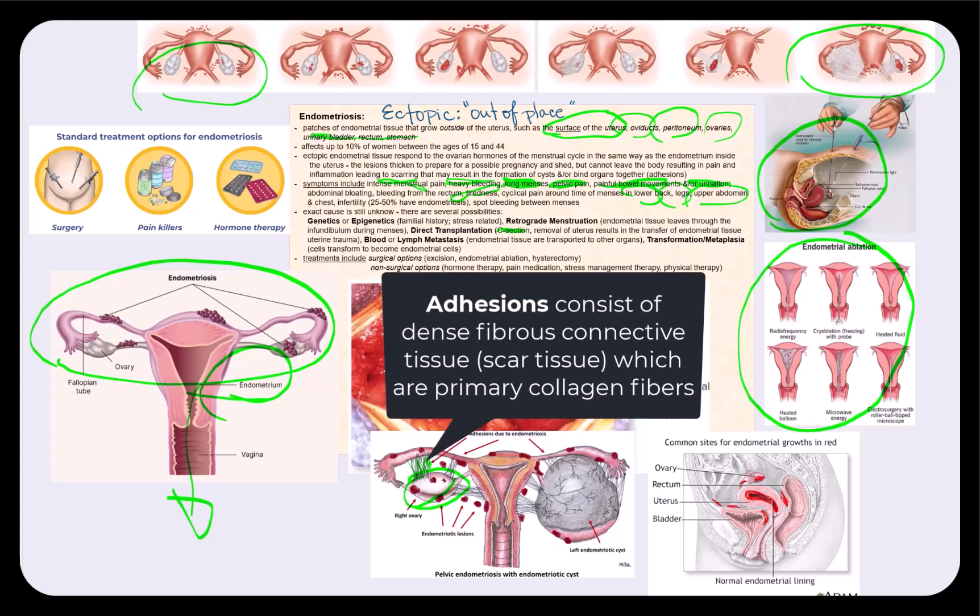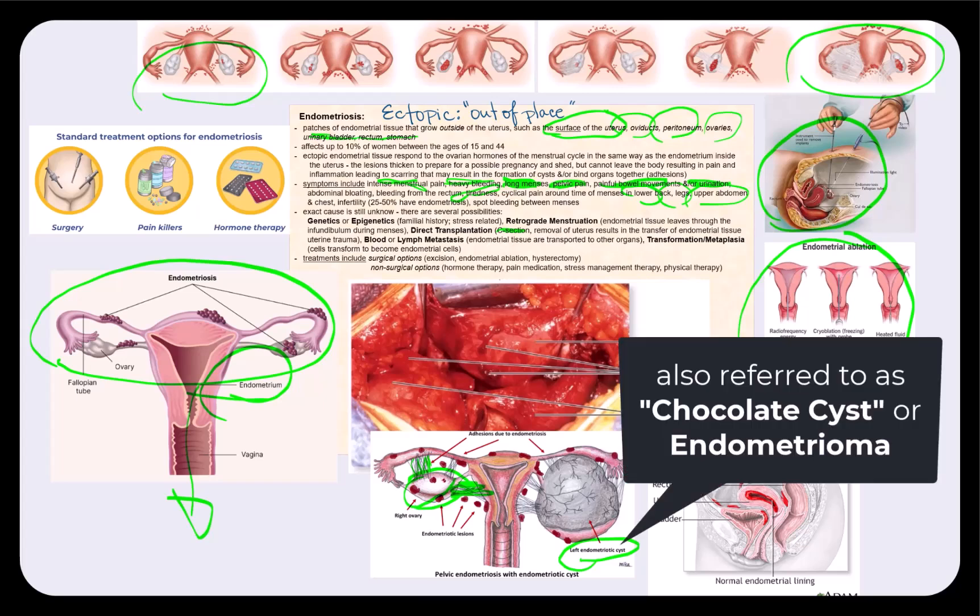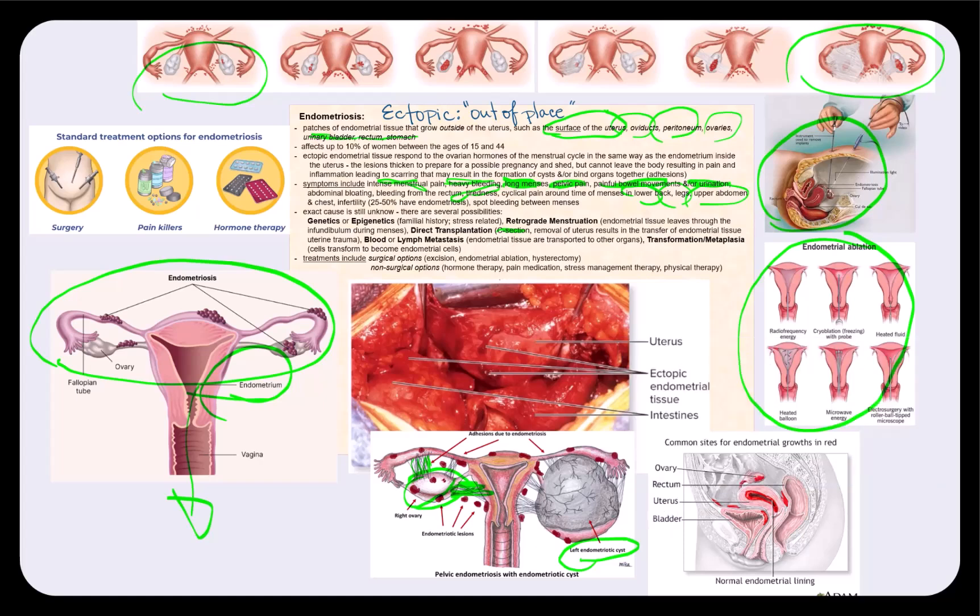as well as the ovary being attached to the uterus. Another possibility is the formation of what's called an endometriotic cyst. This essentially is endometrial tissue that has formed around the ovary. And in fact, if we look at an actual female that has endometriosis, you can clearly see the ectopic endometrial tissue that has grown outside of the uterus. The last image shows common sites where this endometrial tissue can transplant and grow.